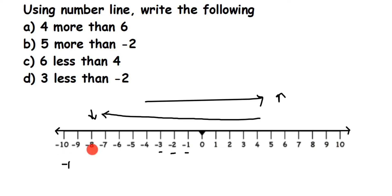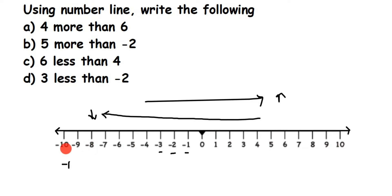Which one is smaller — minus 10 or minus 8? Minus 10 is smaller. Though the 10 is greater, when it has a negative sign it becomes smaller. Minus 10 is farther from zero than minus 8, so minus 10 is less than minus 8. Numbers further left on the number line have lesser value. That's about the number line — now let's start solving.